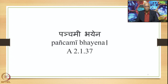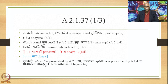Sutra 2.137 is 'Panchami Bhayena.' There are two words in the Sutra: Panchami and Bhayena. The word Panchami occurs in the Prathama Vibhakti, and so the word in the Panchami Vibhakti is termed Upasarjana because of the Sutra 'Prathama Nirdhishtam Samasa Upasarjanam.' Because of the next Sutra 'Upasarjanam Purvam,' the word in the Panchami Vibhakti will have Purva Nipata — that is, it will occupy the initial position in the compound.